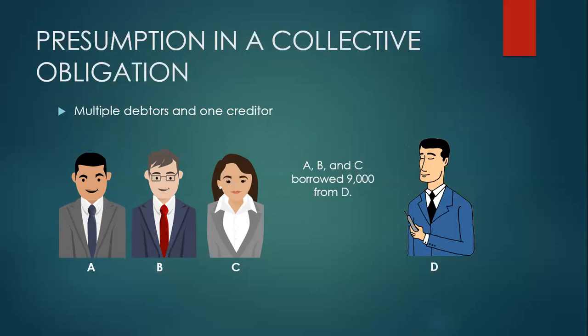So for example, the problem says A, B, and C borrowed 9,000 from D. Since there is no express stipulation that the obligation is solidary, nor does the law or nature of the obligation require solidarity, the obligation is presumed to be merely joint — meaning their liabilities are separate. The effect of joint obligation: D can collect only up to 3,000 from A, 3,000 from B, and 3,000 from C. The obligation is proportionate.